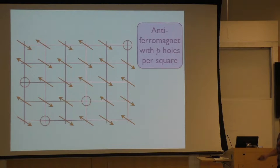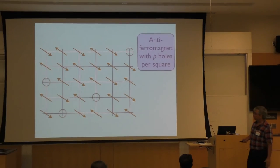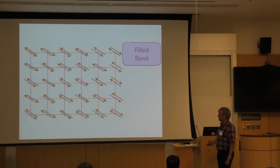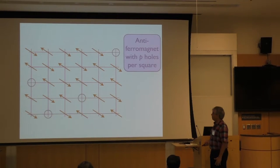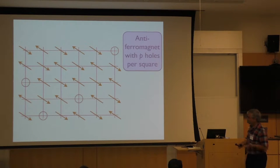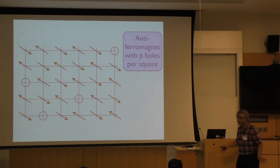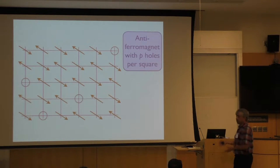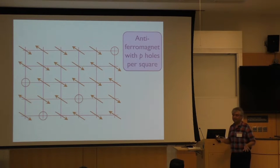So if I use Fermi liquid theory, I have to start with a reference point which is non-interacting. The non-interacting insulating state is the fill band — that's the insulating state. So Fermi liquid theory would say that when I put in P holes here and get a state that's a metal which doesn't break any symmetry, then the volume enclosed by the Fermi surface of holes should be 1 plus P.